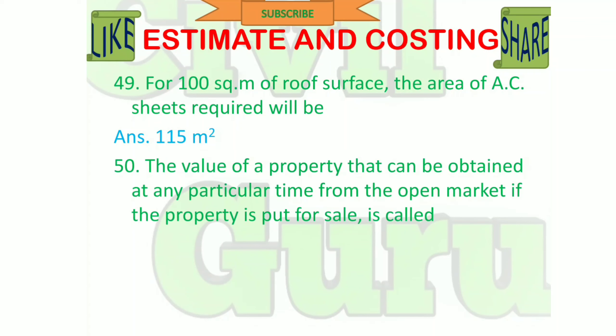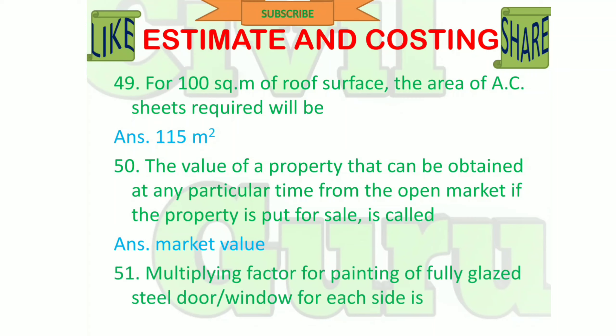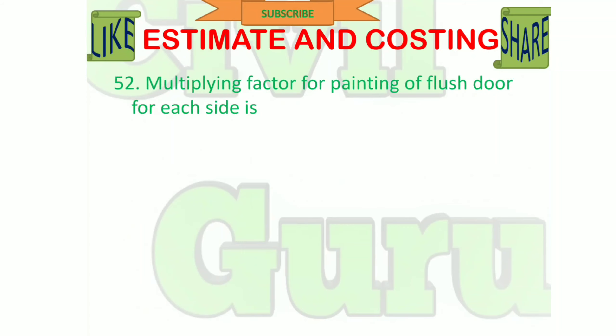The value of property that can be obtained at any particular time from the open market if the property is put for sale is called market value. The multiplying factor for painting of a fully glazed steel door or window for each side is 0.5. The multiplying factor for painting of a flushed door for each side is 1.2.